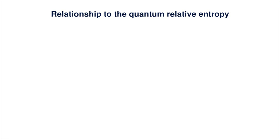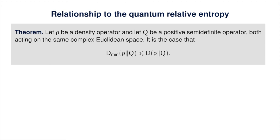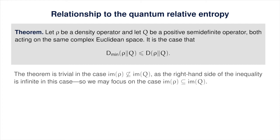Next, we'll prove a basic fact concerning the min-relative entropy, which is that it is always upper bounded by the ordinary quantum-relative entropy, stated here as a theorem. Notice that there is nothing to prove in the case that the image of rho is not contained in the image of q, because the right-hand side of the inequality is positive infinity in this case. So we'll focus on the case that the image of rho is contained in the image of q.